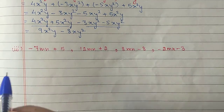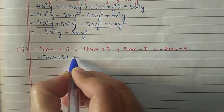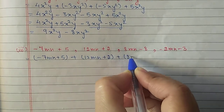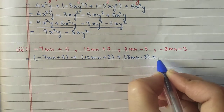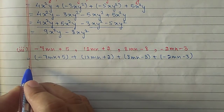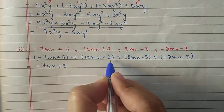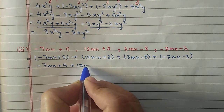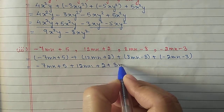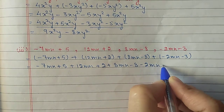Third part: minus 7mn plus 5, plus 12mn plus 2, then 8mn minus 8, and plus minus 2mn minus 3. All four expressions we have to add. Remove the brackets — where plus is there, it opens as it is, no change. So we get 8mn minus 8 and minus 2mn minus 3.